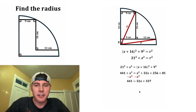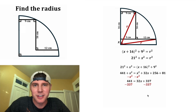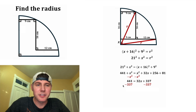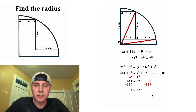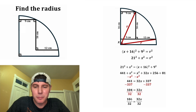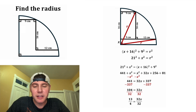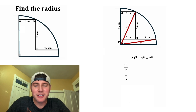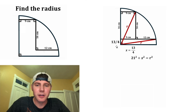Let's bring everything together. We want to isolate X, so let's subtract 337 from both sides. On the left-hand side, 441 − 337 = 104. On the right-hand side, those cancel, leaving 32X. Next, we divide both sides by 32. Both 104 and 32 have 8 in common, so we simplify to 13 over 4. The 32s cancel on the right, leaving X. So X = 13/4.